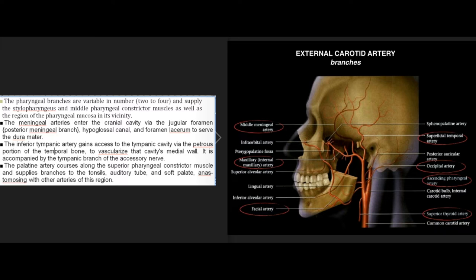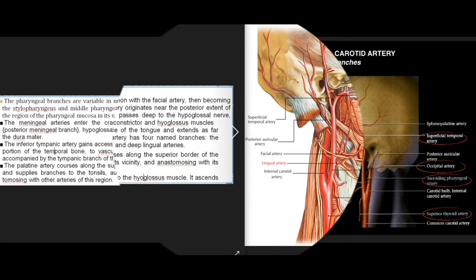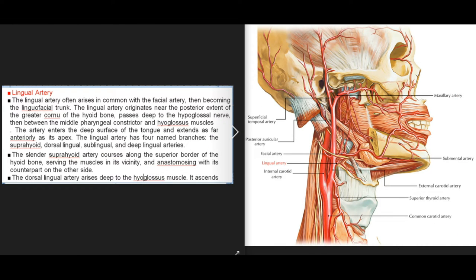The inferior tympanic artery gains access to the tympanic cavity via the petrous portion of the temporal bone to vascularize that cavity's medial wall, accompanied by the tympanic branch of the accessory nerve. The palatine artery courses along the superior pharyngeal constrictor muscle, supplying branches to the tonsils, auditory tube, and soft palate, anastomosing with other arteries of this region. The lingual artery often arises in common with the facial artery as the linguofacial trunk, originating near the posterior extent of the greater cornu of the hyoid bone.